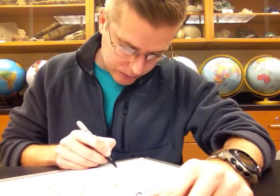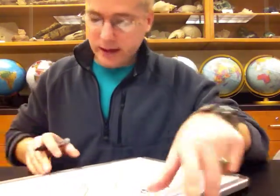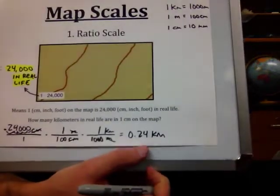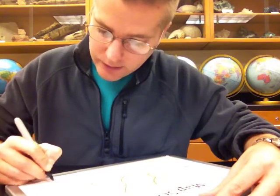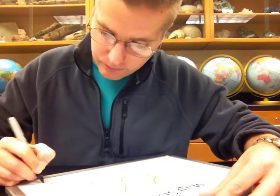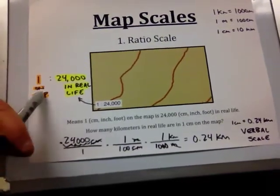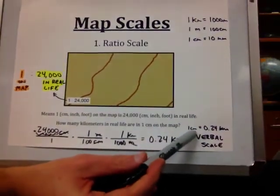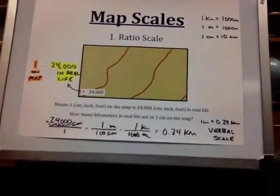Moving the decimal point five spaces gives us 0.24 kilometers. So 1 centimeter equals 0.24 kilometers — what we call a verbal scale. In a ratio scale, both sides use the same units, such as centimeters to centimeters. In a verbal scale, the units are different on each side: 1 centimeter on the map equals 0.24 kilometers in real life. This distinction is important to know as you work through the lab.